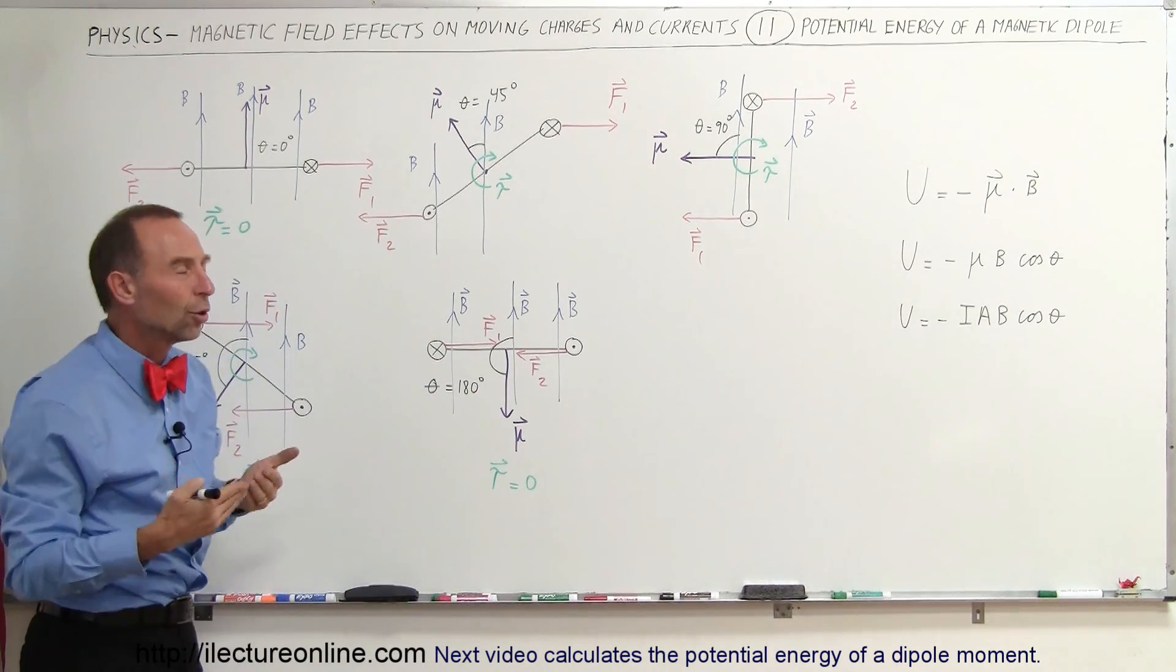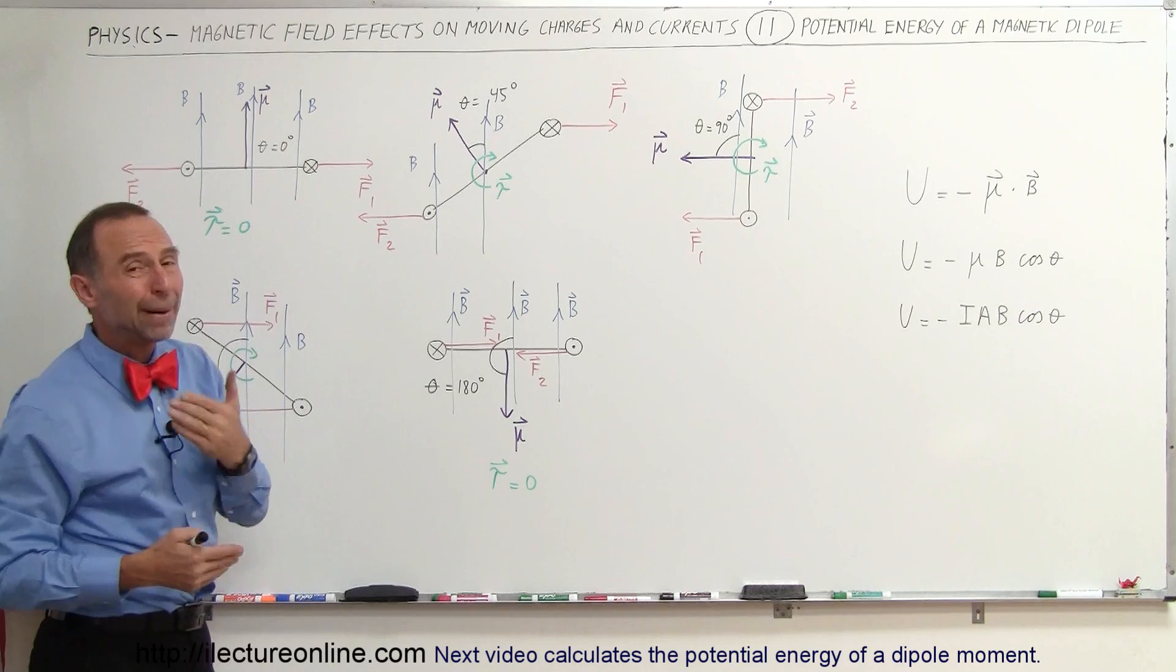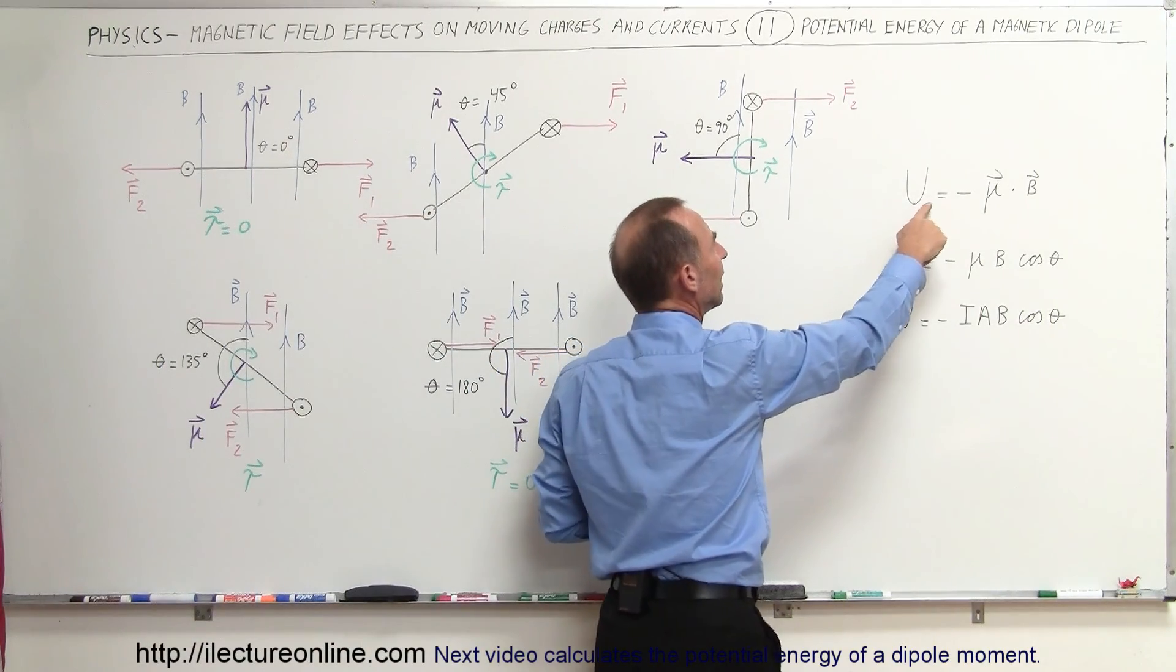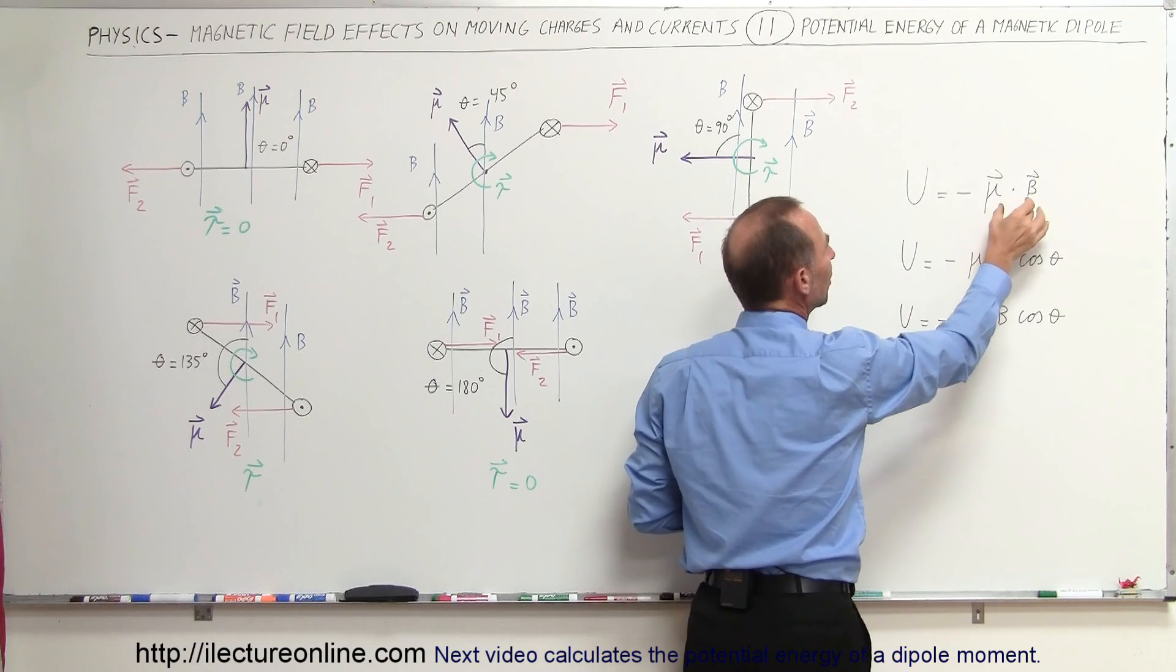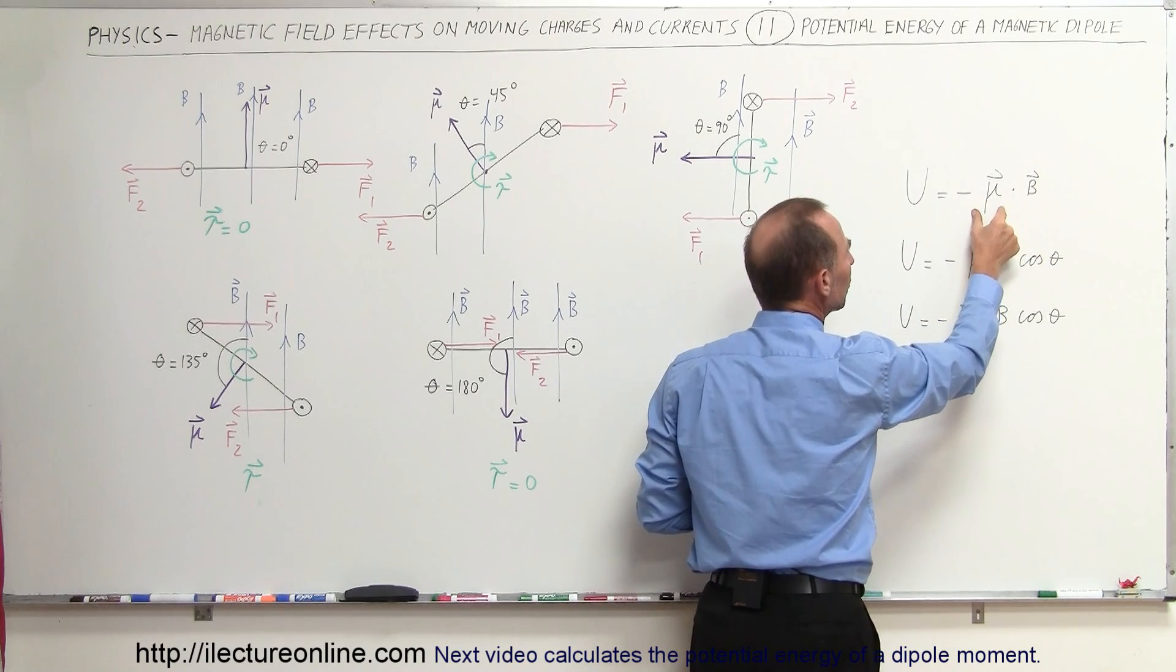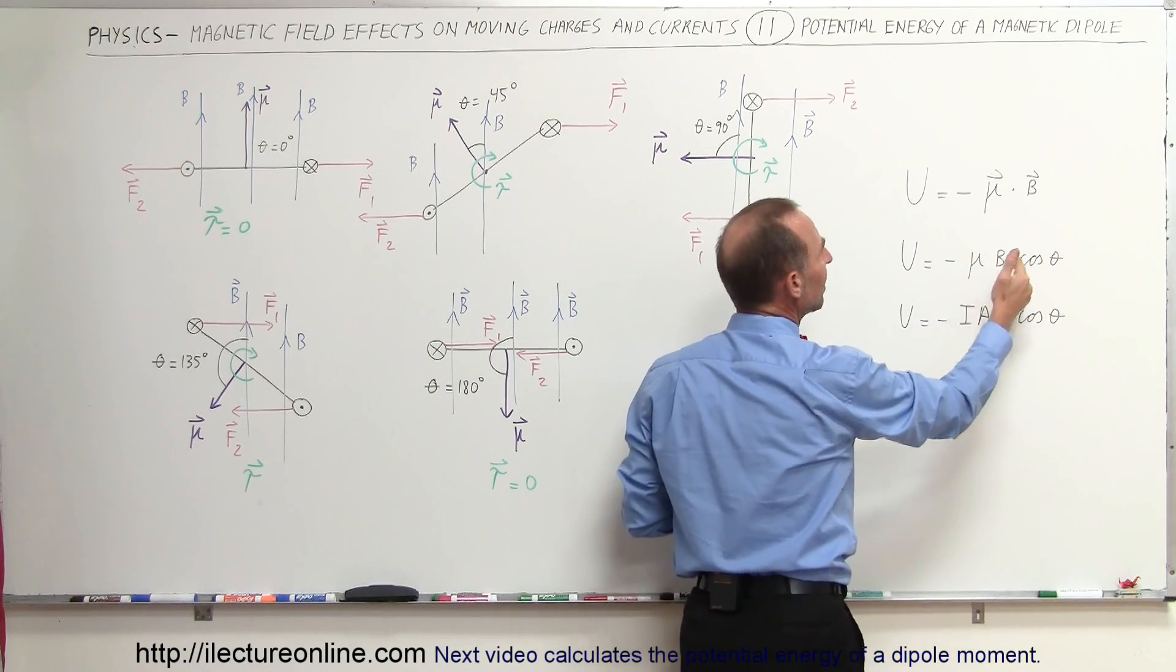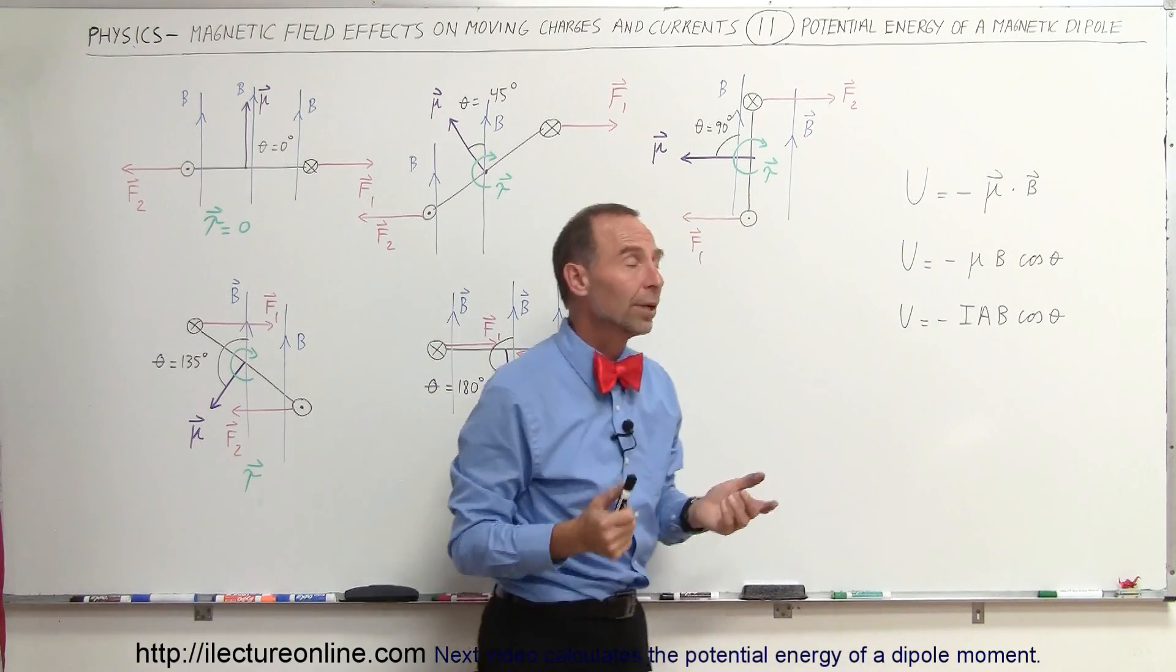So now you've stored the max amount of energy in the loop. By definition, the energy stored, which we use the letter U for that, is equal to the negative of the dot product between the magnetic dipole moment and the B field. And of course, we can calculate that to be mu times B times the cosine of the angle between them.